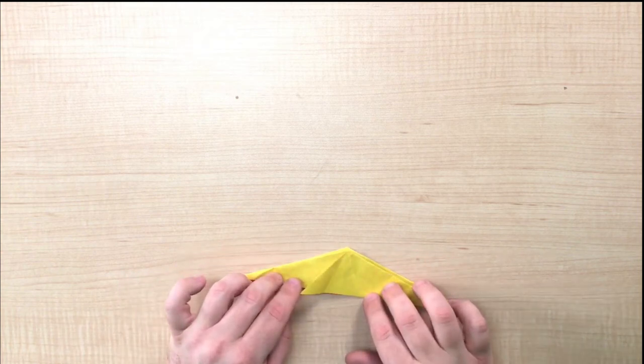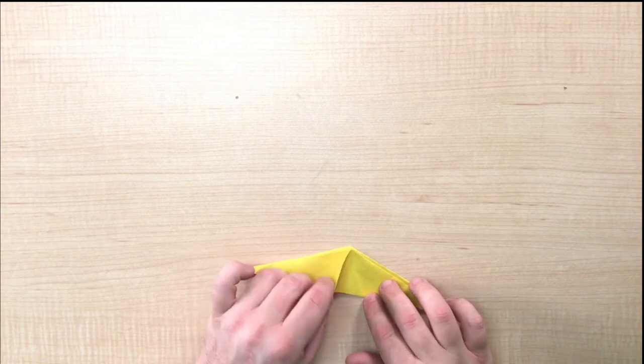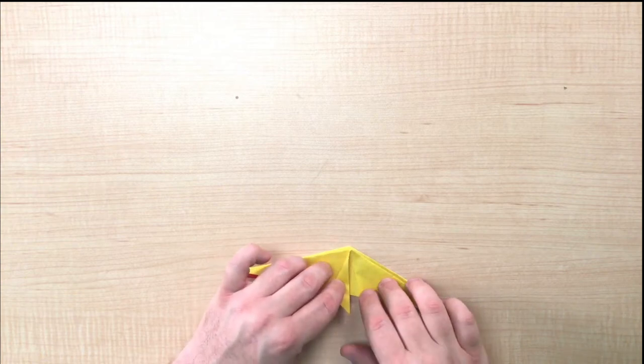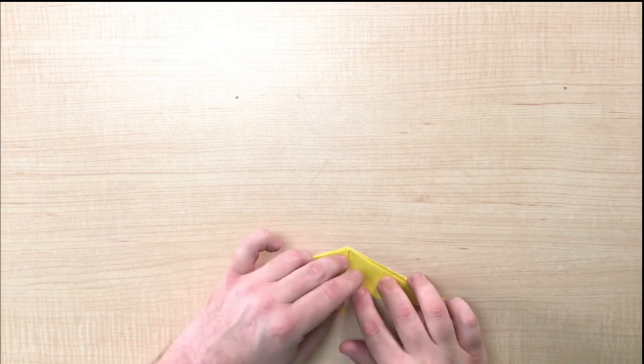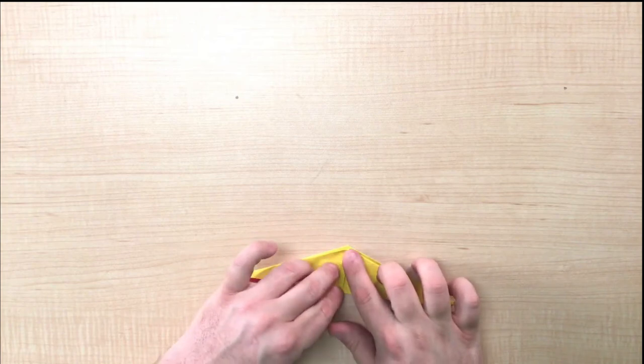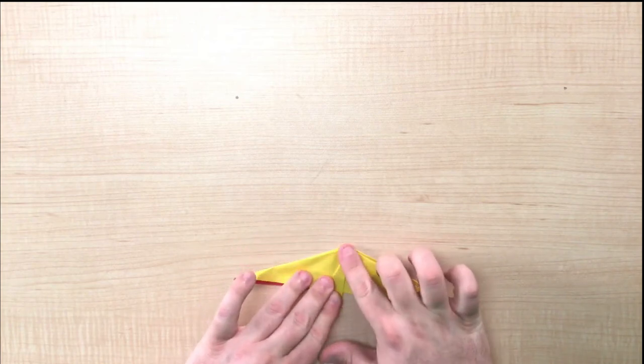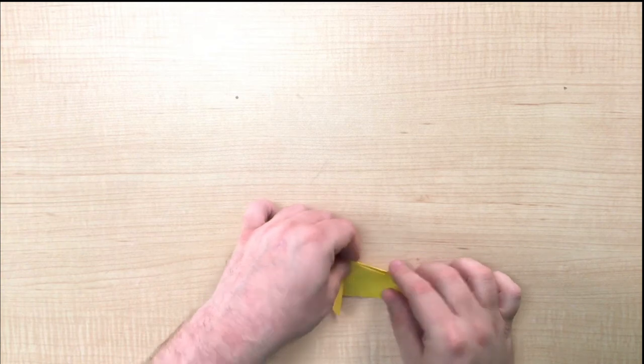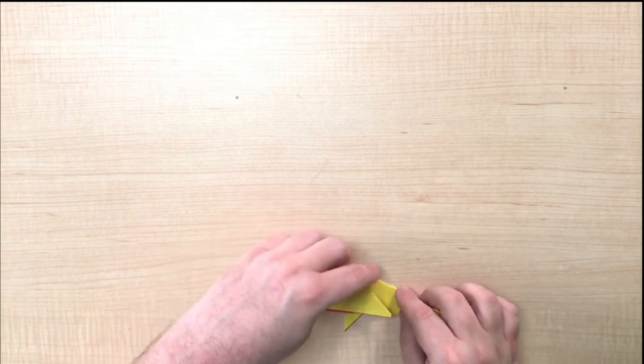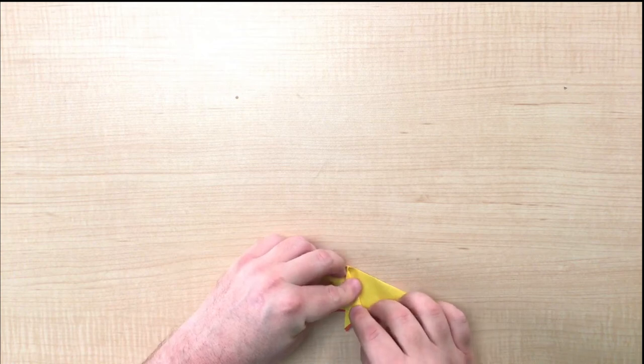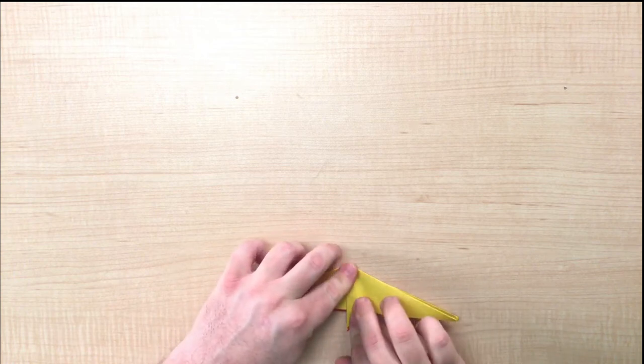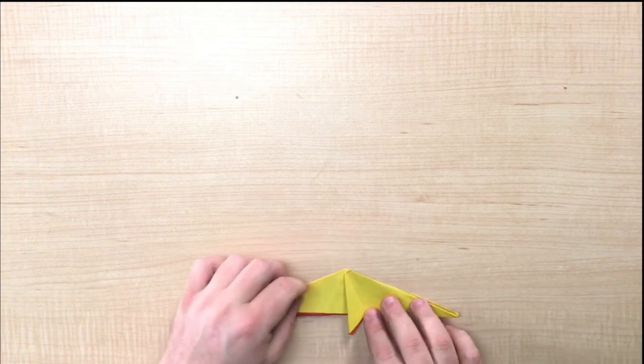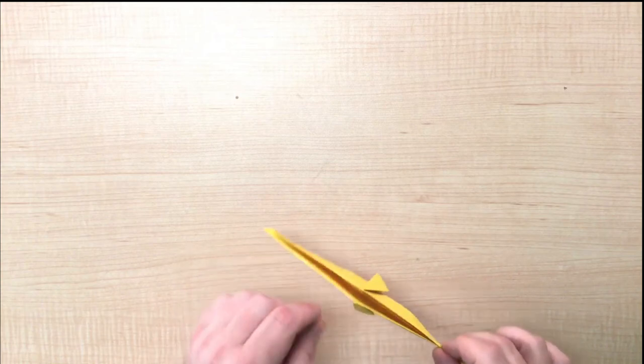Take the flap in the middle and fold it back so that it points down. Flip your paper over and repeat with the other flap. Then flip your paper back.